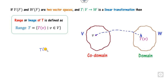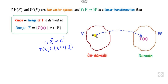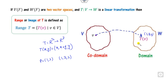For example, consider the mapping T(x, y) = (x, x+y, y), which is a mapping from R2 to R3. If you consider the element V = (1, 2), then the corresponding image is (1, 3, 2). Similarly, there are many more elements in the range, such as (2, 4, 9), and so on.